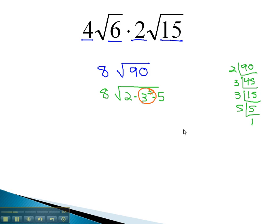This means we can pull a 3 out by dividing the exponent 2 by 2, and we have one 3 coming out. 8 times 3 is 24, and inside the square root, 2 times 5 is 10.